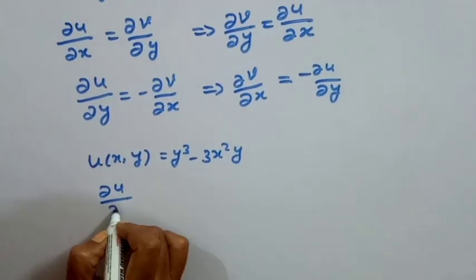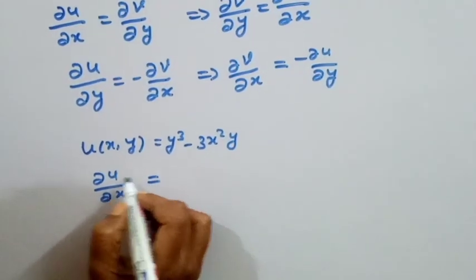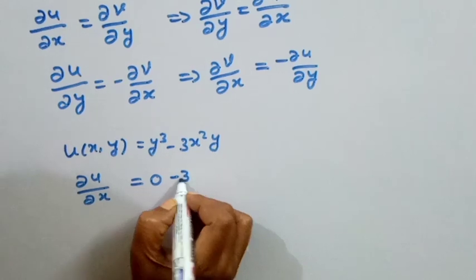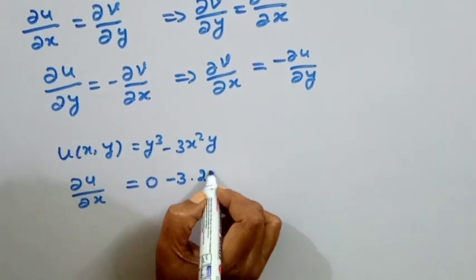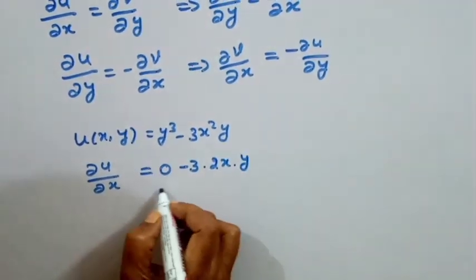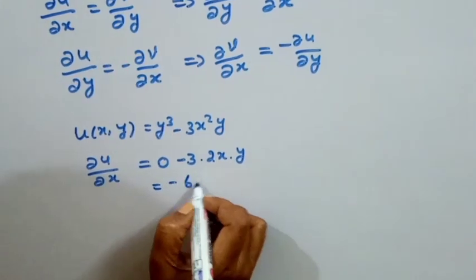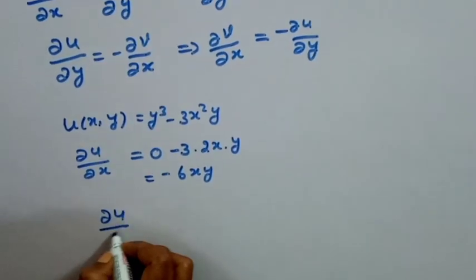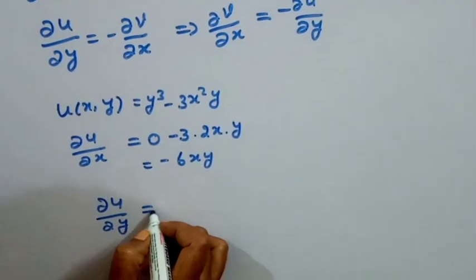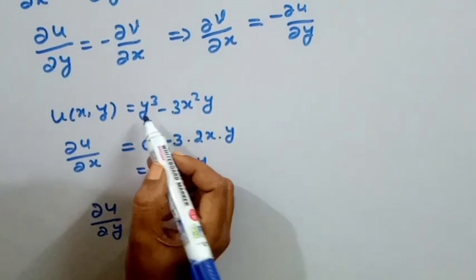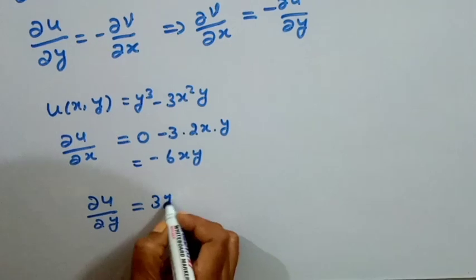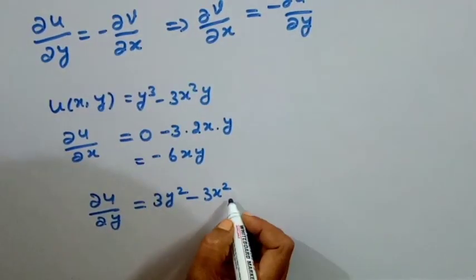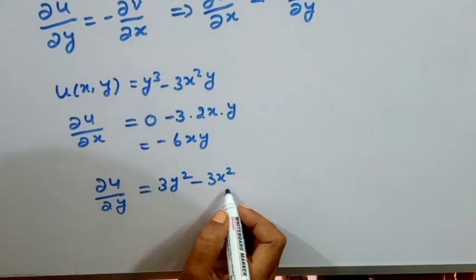Now, dou u by dou x: differentiating with respect to x, y is constant, so y cube gives 0, and minus 3x square y differentiates to give minus 6xy. This is dou u by dou x. Next, dou u by dou y: differentiating y cube gives 3y square, and minus 3x square times y differentiates to minus 3x square.